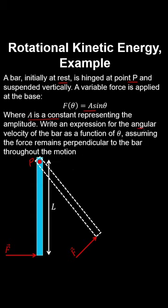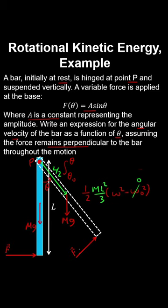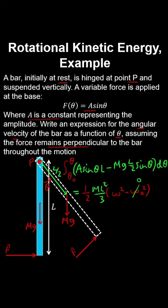A bar rotates under a constant applied force; write an expression for angular velocity as a function of theta, assuming the force remains perpendicular to the bar. Using the rotational work-energy theorem, with the bar initially at rest and moment of inertia about its end point ML²/3, the net torque includes the applied force (moment arm L) and the force of weight through the centre of mass at L/2: torque = FL + (MgL/2) sin theta. Evaluating the integral and solving for angular velocity gives the result; post your answer in the comments.